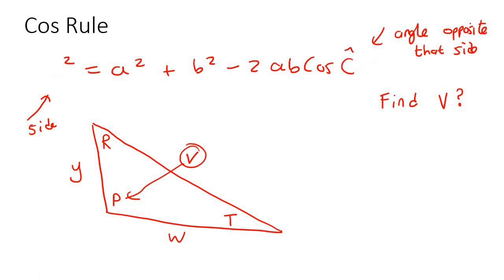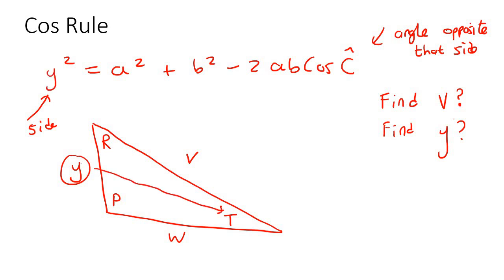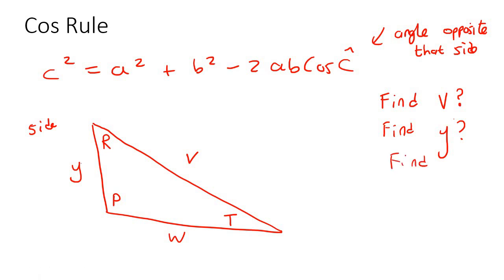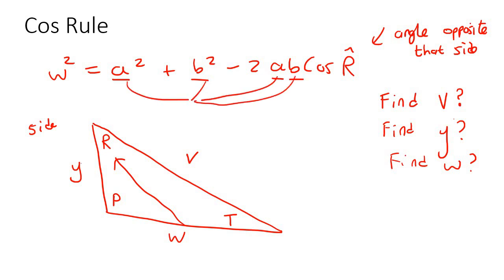Let's try another one quickly. Let's say you were trying to find side Y. Then you would put the Y over here, and then the angle opposite would be T, so you'd put that there. Now let's say you were trying to find side W. Then you'd put W over here, and the angle opposite W would be R. Now the A and the B are also sides — that's why they have small letters. So these are all sides, like the Y, the W, and the V.